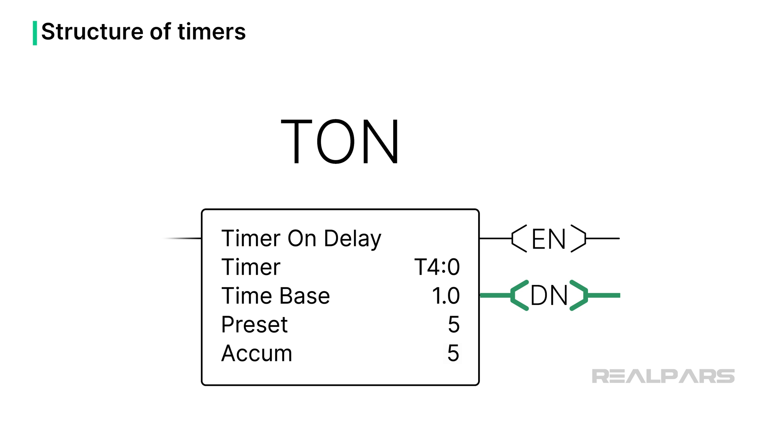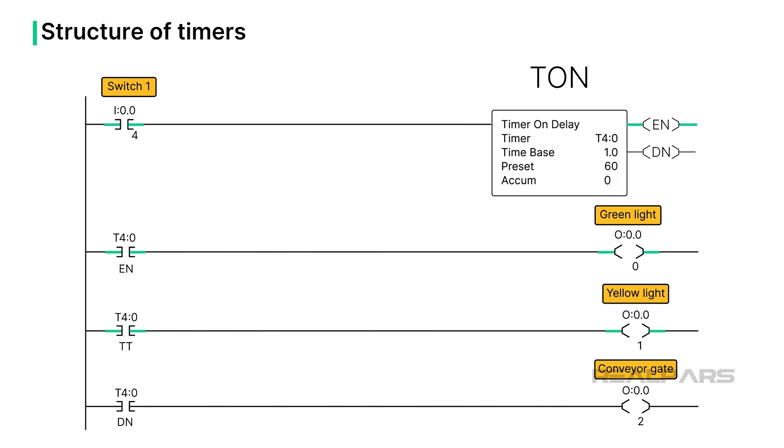During the time that the timer is enabled and timing up to the preset value, the enable, or EN bit, and timing, or TT bit, is set. These bits can be used in other rungs of the logic to allow downstream logic to execute.